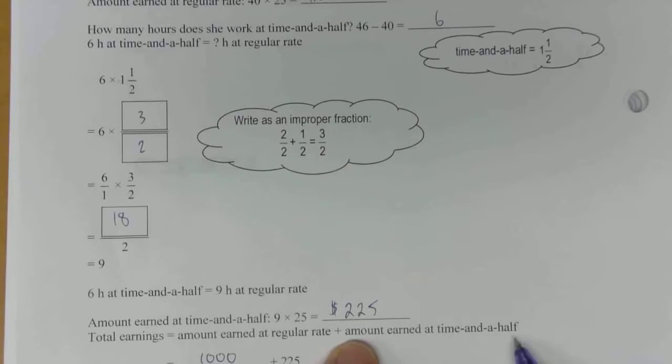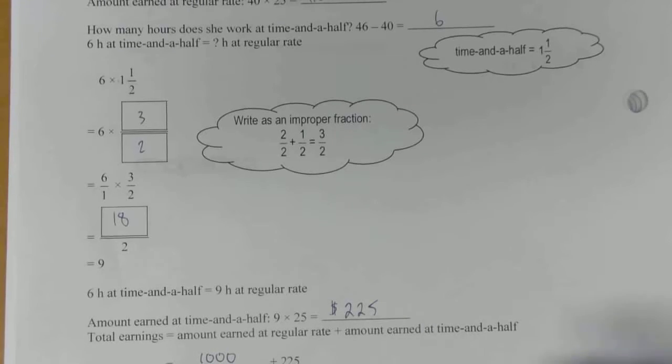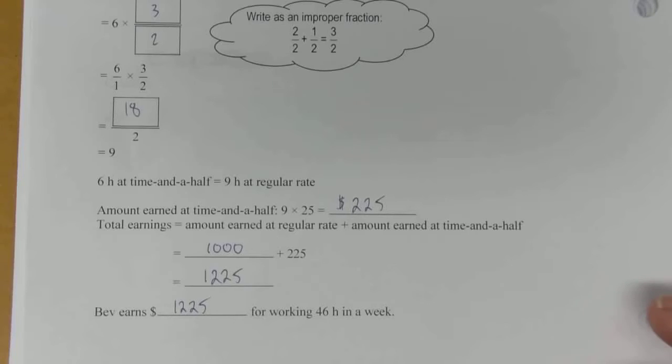And then the amount earned at the other six hours was $225. So when you add that up, she's making $1,225 for working 46 hours in a week.